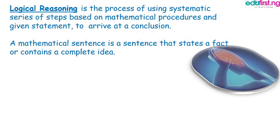What is logical reasoning? It is the process of using a systematic series of steps based on mathematical procedures and given statements. What this means is that equations, solutions, formulas in mathematics must follow a systematic series of steps or procedures before you say they are logical. For you to arrive at a logical conclusion in mathematics, you must follow a procedure or a series of steps. Otherwise, what you are doing is not logical.